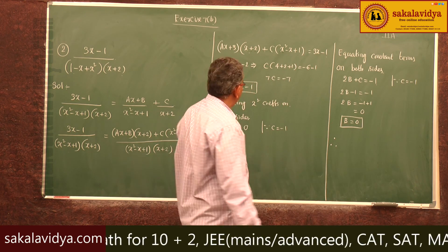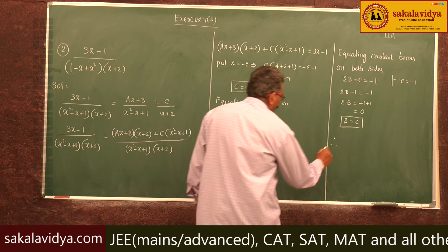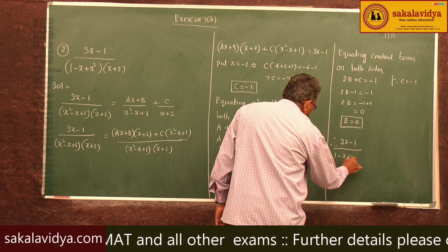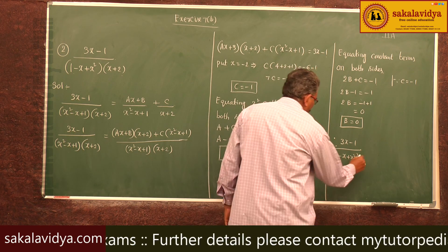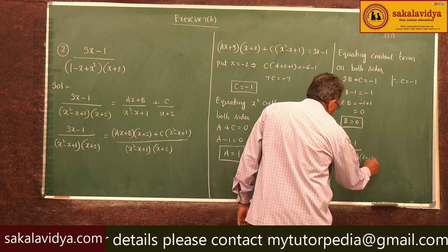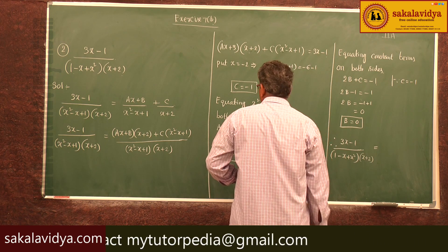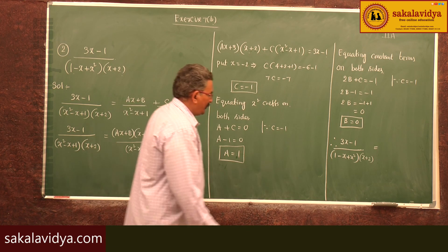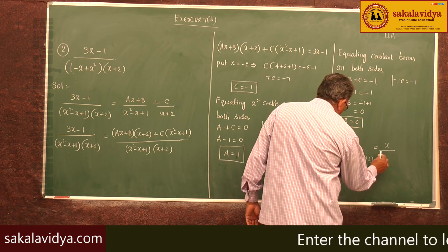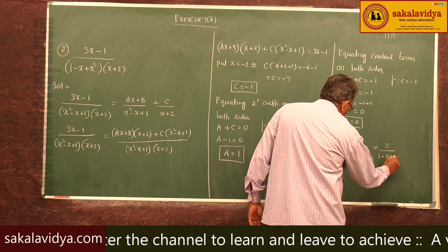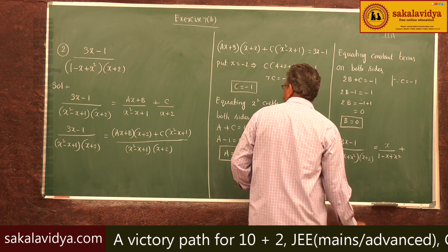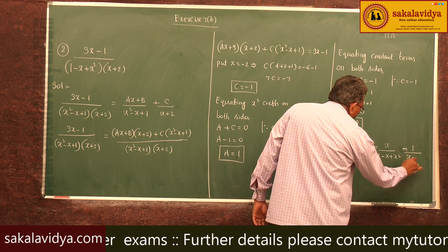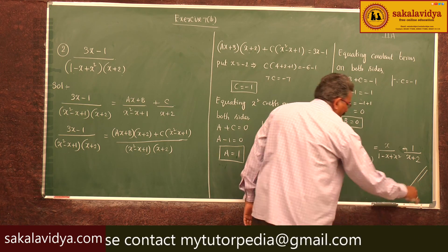Therefore, the partial fractions of (3x - 1) / [(1 - x + x²)(x + 2)] are: (Ax + B)/(1 - x + x²) + C/(x + 2). With A = 1, B = 0, and C = -1, this becomes x/(1 - x + x²) - 1/(x + 2). These are the required partial fractions.